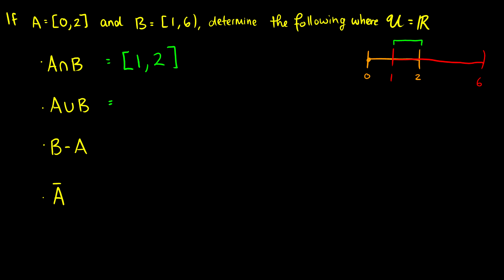For A union B, we want to take a look at the whole thing here. So we have from 0 all the way up to 6 but not including it. So A union B is the entire span of both sets.